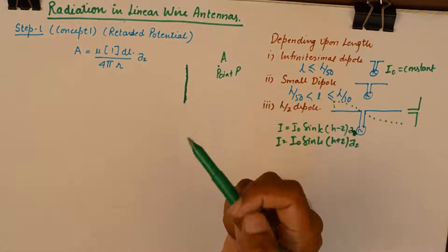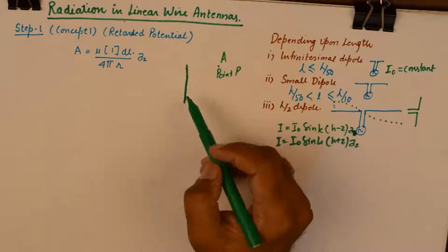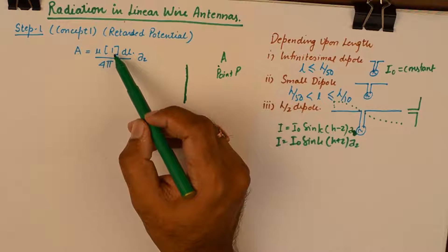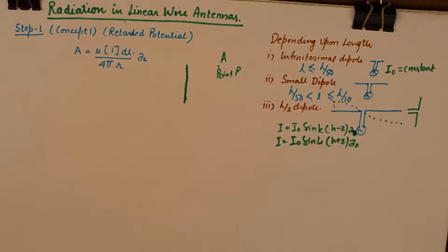This retarded potential which is found at a distant point P will only depend upon the current in the antenna. You can see that this retarded potential is depending upon I, of course it depends upon the distance and the permeability of the material in which the antenna is placed but the deterministic factor which is in our hands is I only, the current flowing in the antenna.